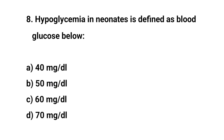Question number eight. Hypoglycemia in a neonate is defined as blood glucose below? The right answer is A: 40 milligrams per deciliter.